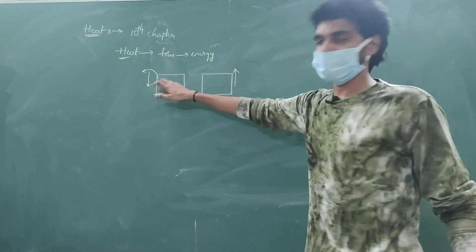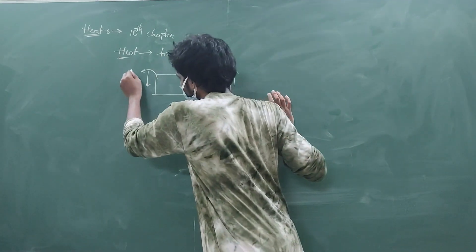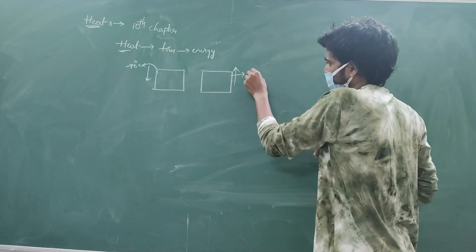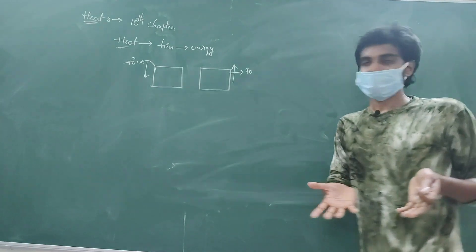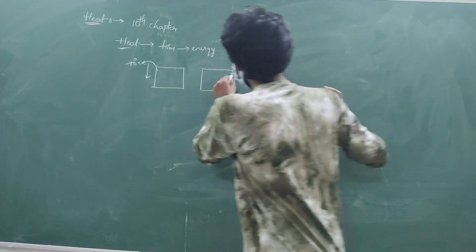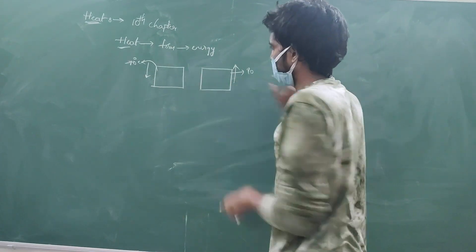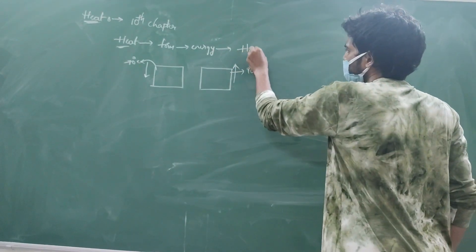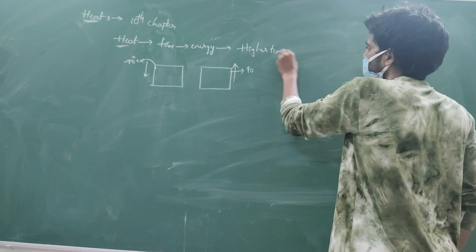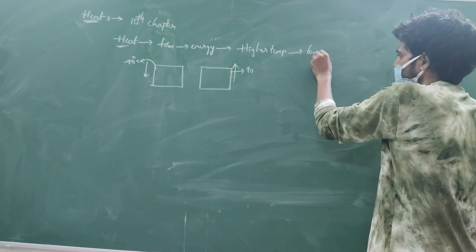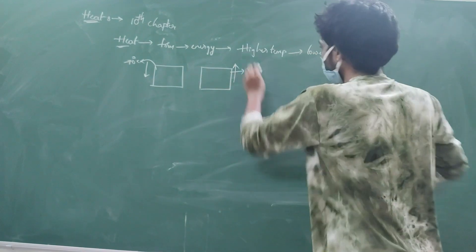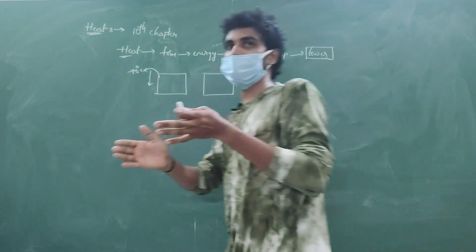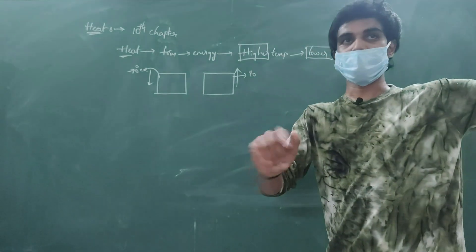Let's show this object. It has 70 degrees centigrade and this one has 100 degrees centigrade. So in the definition, heat is a form of energy. It transfers from a body at higher temperature to a body at lower temperature — higher to lower. That's what happens.